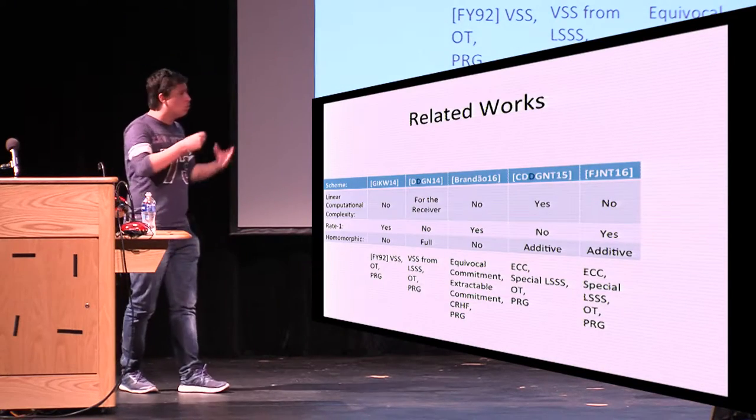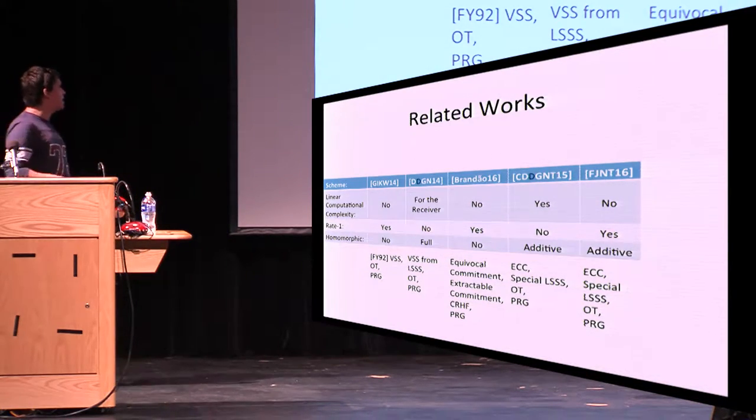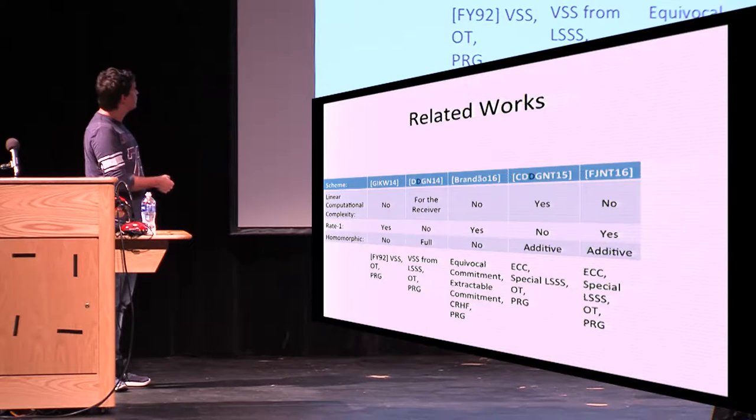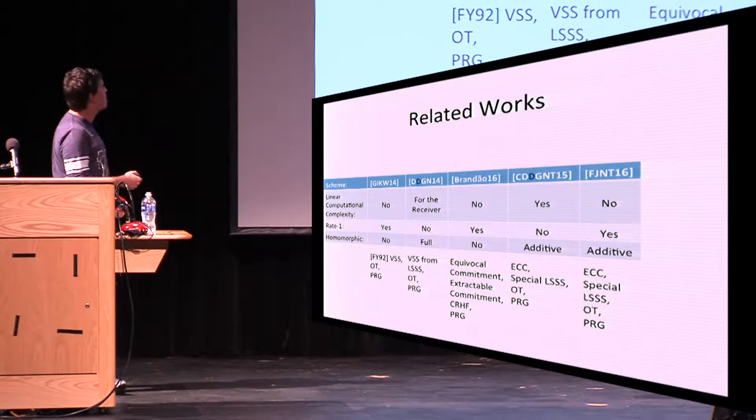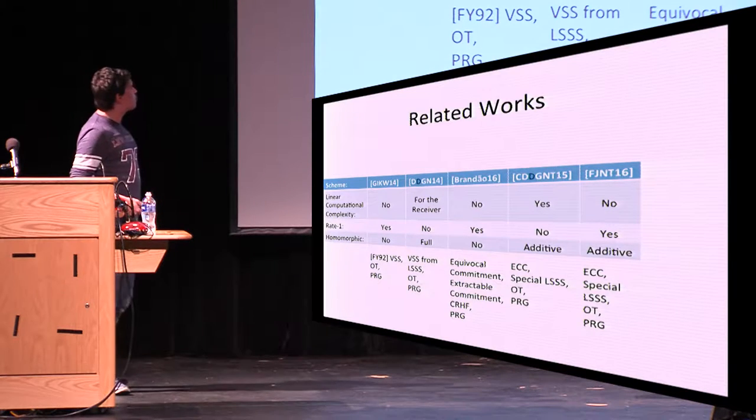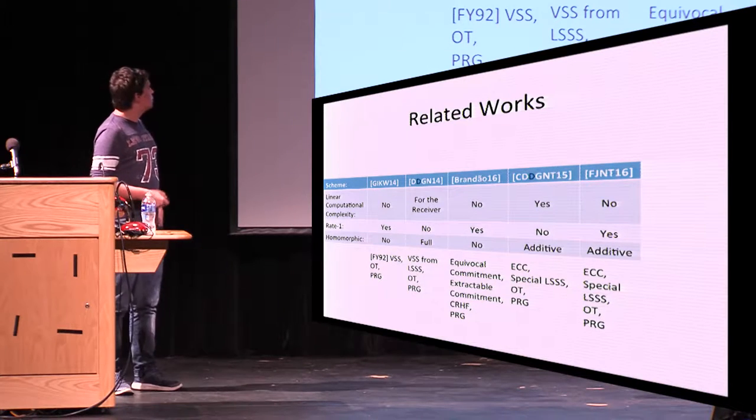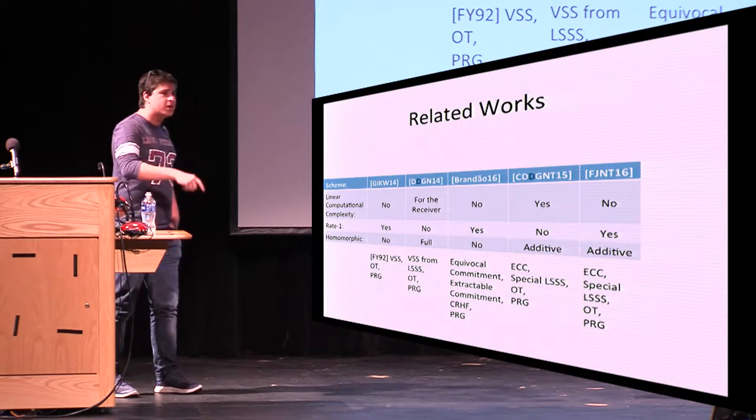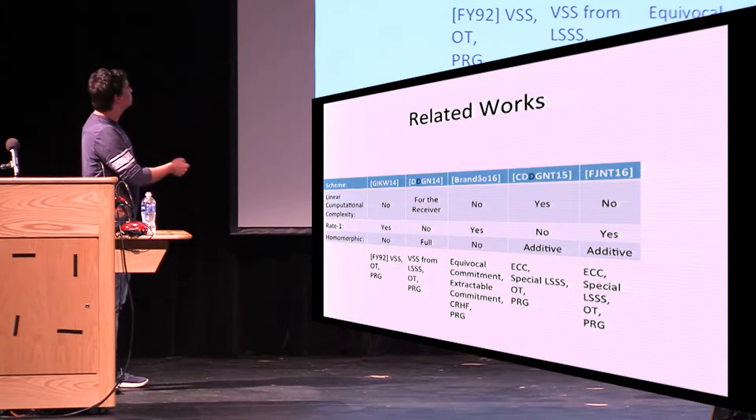Now, back to who did that? I mean, this started in 2014, with a work by Garay, Ishai, Maurer, and Ostrovsky in Eurocrypt, where they showed how to get rate one using more or less the general framework. But still, they didn't get linear computational complexity nor homomorphism. Then, in the same year, we—I mean, me, Ivan Damgård, Irene Giacomelli, and Jesper Buus Nielsen—we showed how to get linear computational complexity for the receiver, getting fully homomorphism, meaning that we can both compute additions and multiplication of commitments. But still, we lost rate one. So you see, we have a compromise here still.